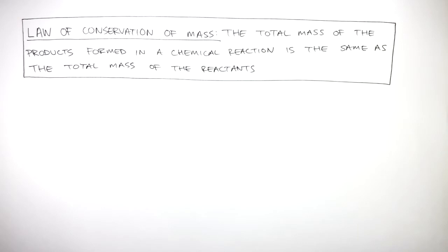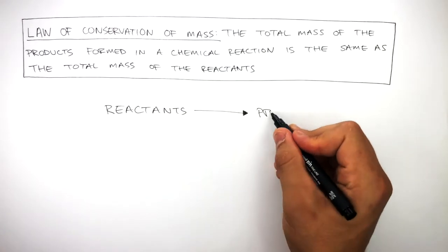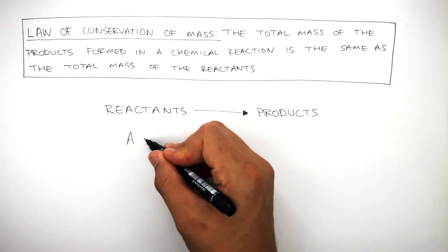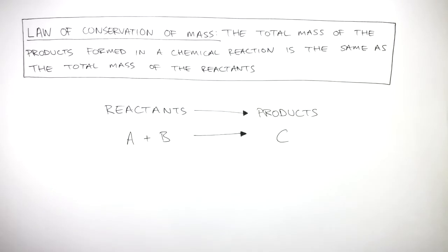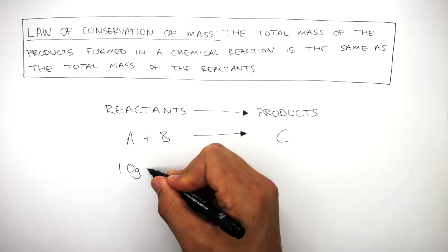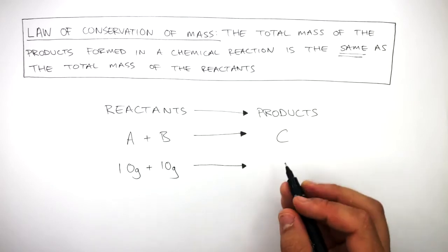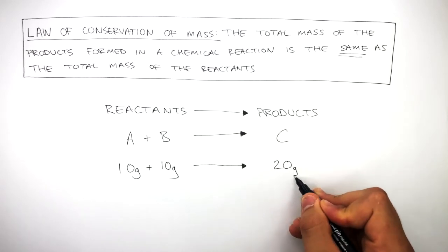In any chemical reaction, reactants form products. For example, if A reacts with B to form C, and there's 10 grams of A and 10 grams of B, the law of conservation of mass tells us there has to be 20 grams of C.